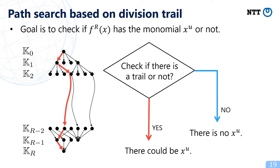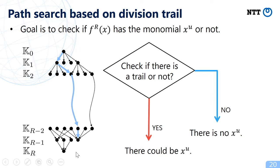We check the existence of a division trail from beginning to end. In this example, we have a red line, meaning there is a division trail — so we say there is a copy of x^u in f^r. But if this trail is removed and there is no trail from beginning to end, we know there is no x^u in the polynomial f^r. However, this property means that even if we use the bit-based division property, we cannot detect the fact that a monomial is always involved. This property is the reason for the assumption we need in the second-generation cube attack.